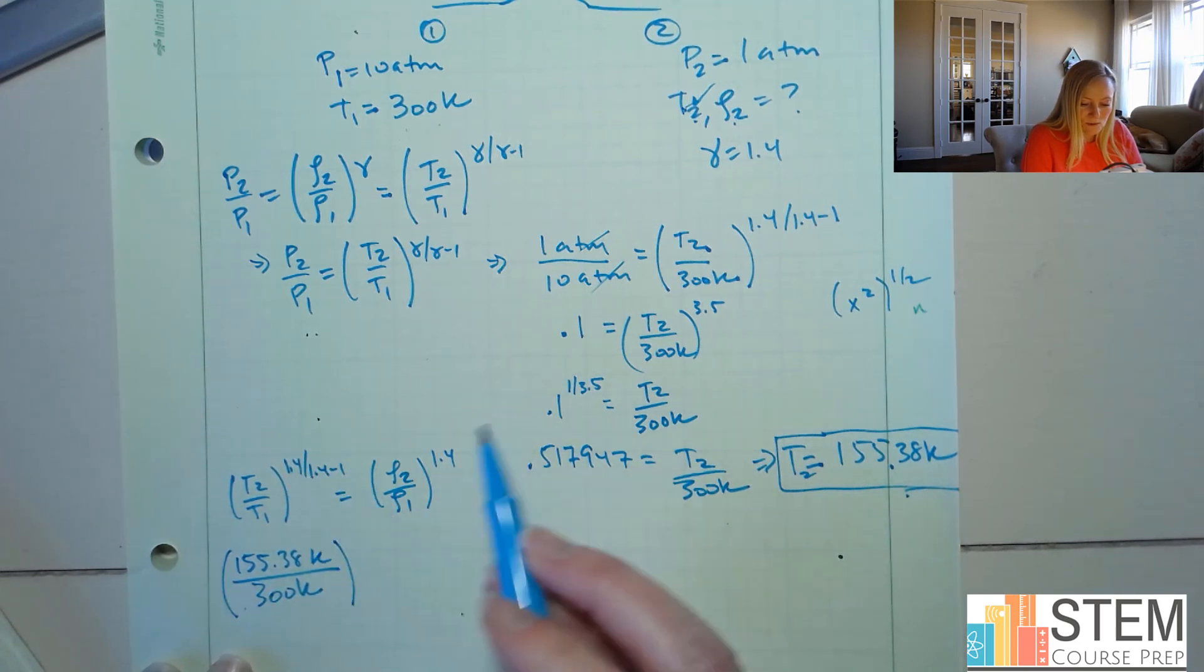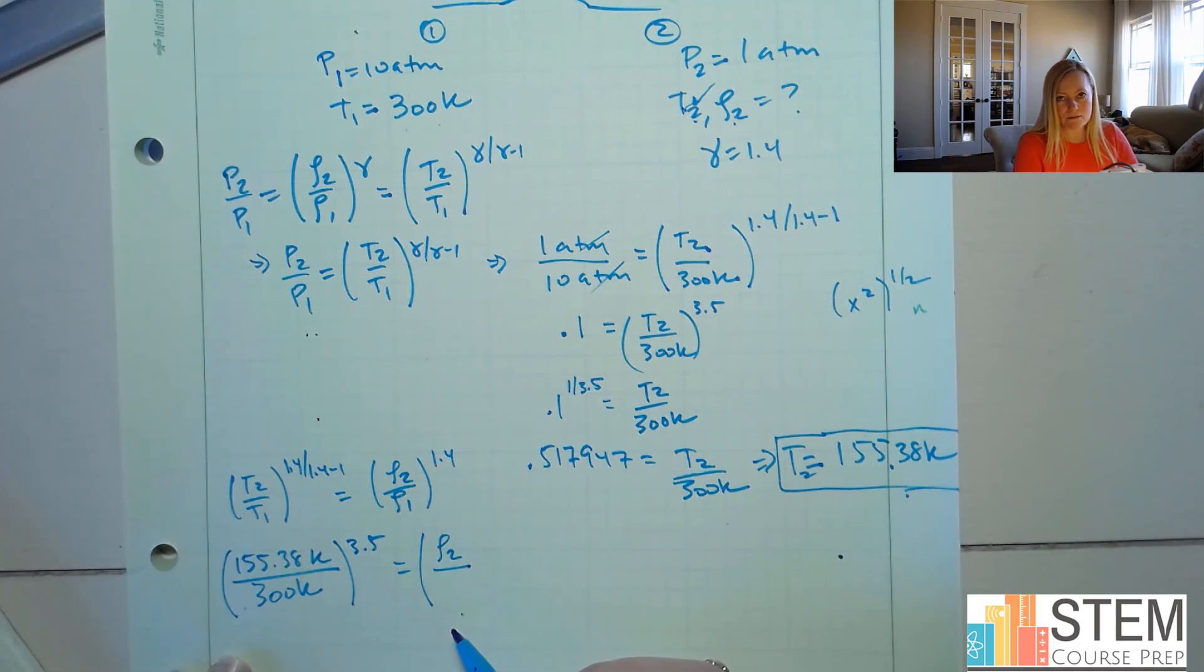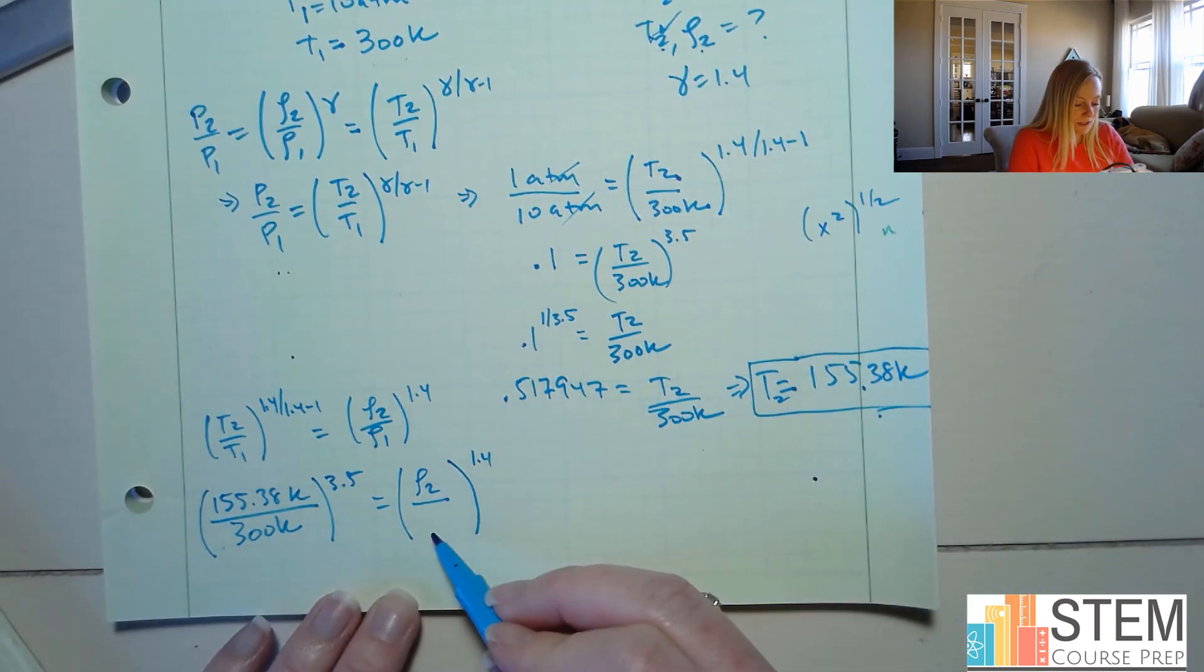Now, we already know this exponent because we just did it over here. It was 3.5. And then we need to set that equal to rho2, which I don't know what that is yet. So let's put it in as an unknown. And then we've got rho1. Well, I don't have rho1 yet, right? So I need to find that value. Okay, so let's just hang on here, and we'll leave this empty for now. And then that power is 1.4. So let's get rho1.